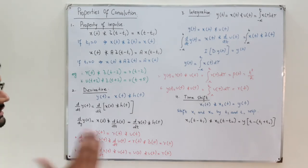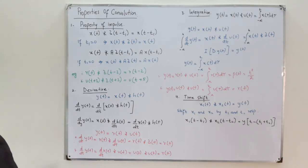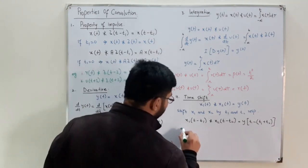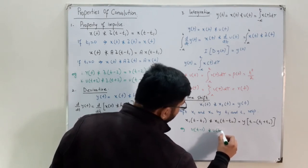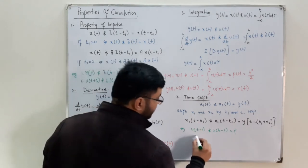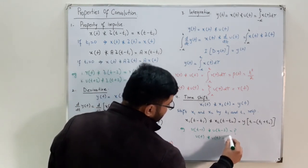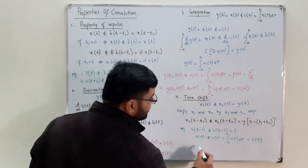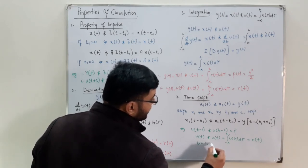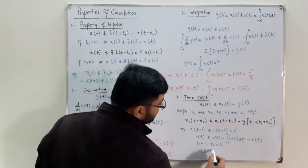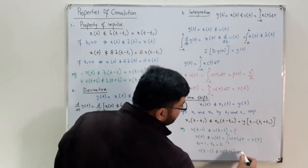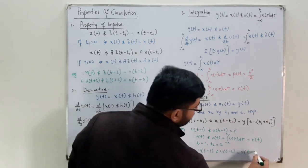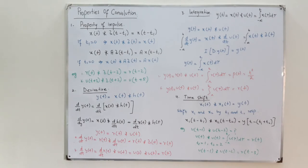For example, u(t − 1) * u(t − 2): we first know that u(t) * u(t) = r(t). Then t₁ = 1 and t₂ = 2, so the answer is r(t − 3). You add the delays together: 1 + 2 = 3. This is the time shift property.